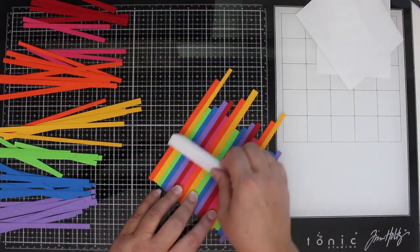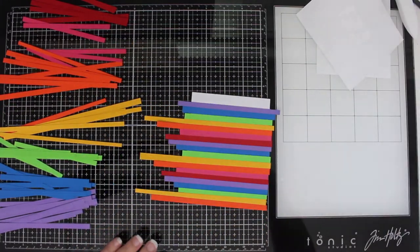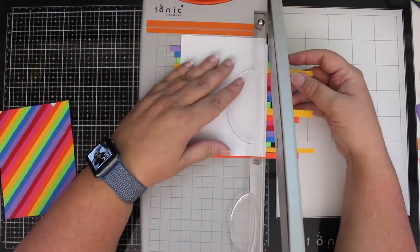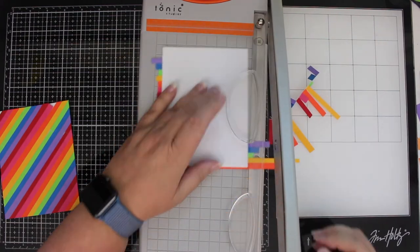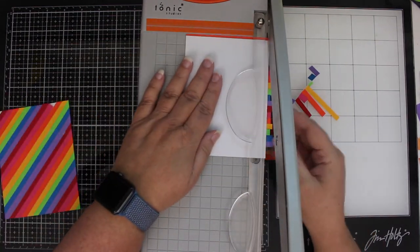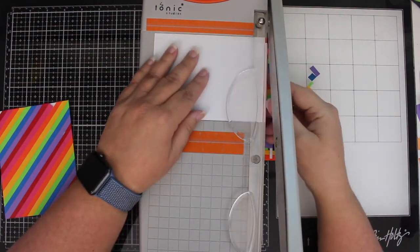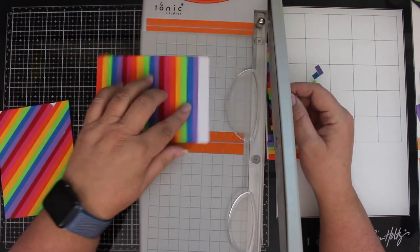Once I've finished with all of my strips I'm going to take my bone folder once again get it nice and good and burnished in and then I'm going to go back to my guillotine trimmer and trim off all those little edge pieces. This way my edges are going to be nice and flush and straight when I'm all done and ready to turn this into a card.